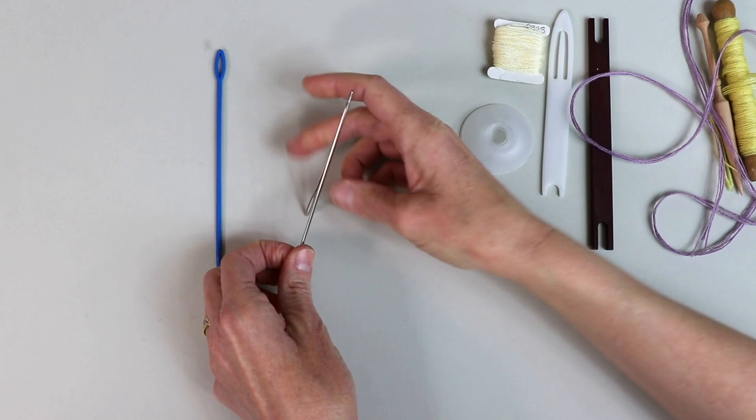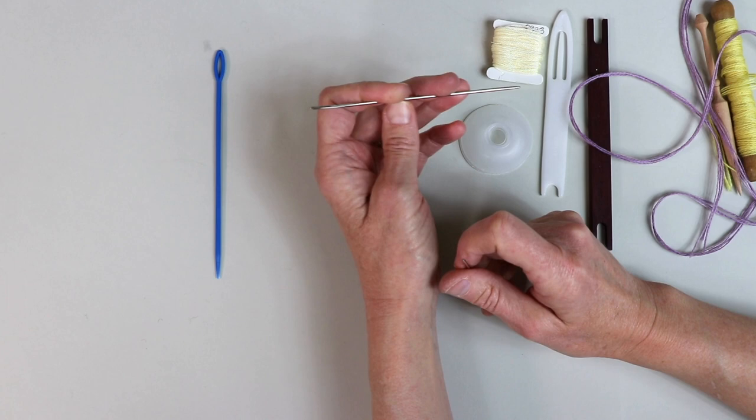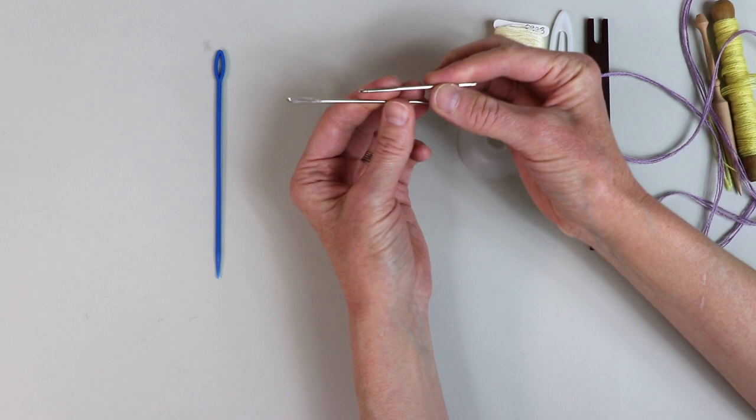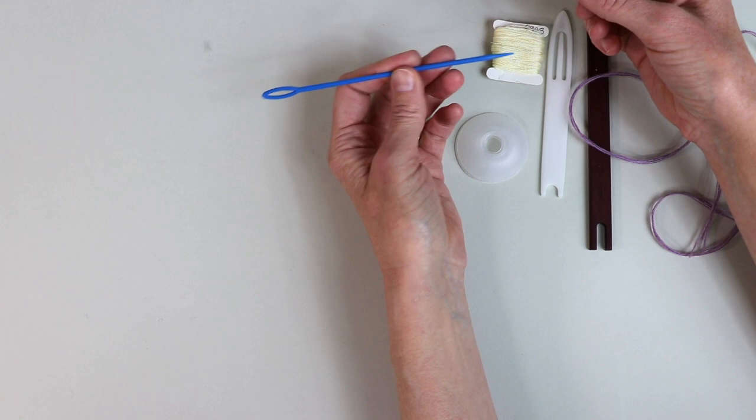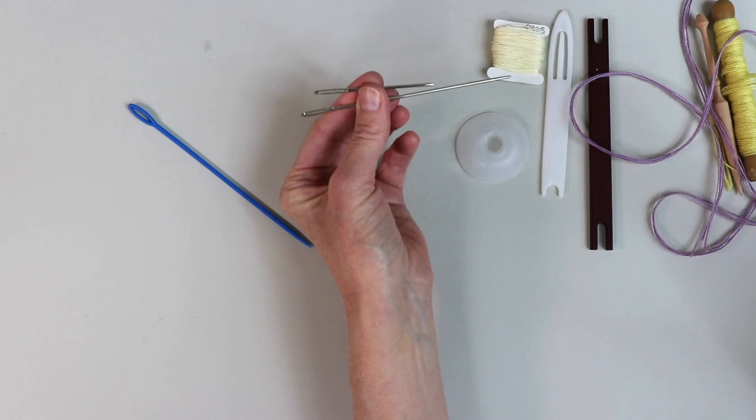And of course there are any numbers of just plain old yarn needles. This is the Susan Bates 5 inch yarn needle. I really like this for weaving on small looms mostly is what I use this for, or just a plain old metal yarn needle, or even sometimes you can find these plastic ones and they will work fine. The yarn doesn't stay in these quite as well as in these metal ones but you should be able to find these all over the place.